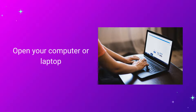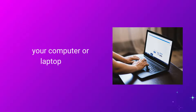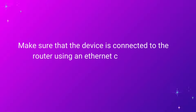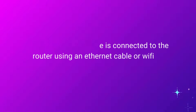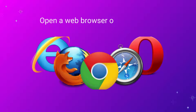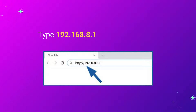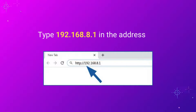Open your computer or laptop. Make sure that the device is connected to the router using an Ethernet cable or Wi-Fi. Open a web browser of your choice and type 192.168.8.1 in the address bar.